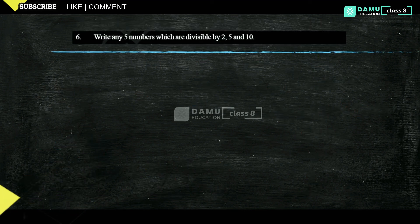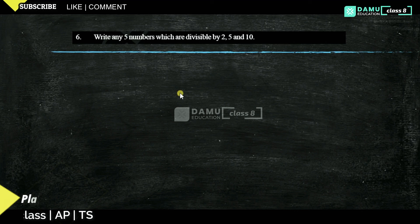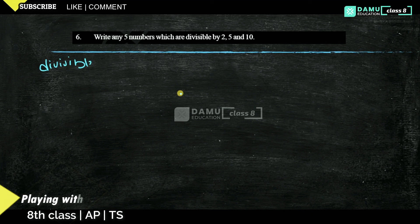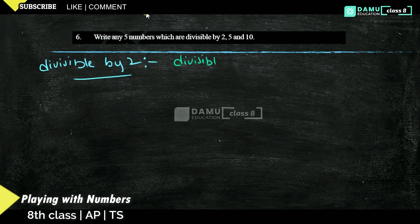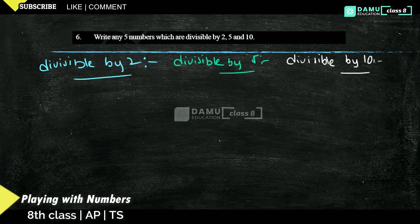In the sixth question, we write any 5 numbers which are divisible by 2, 5, and 10. We need to know the divisibility rules: for 2, the unit digit should be 0, 2, 4, 6, or 8; for 5, it should be 0 or 5; for 10, it must be 0. The key is to check unit digits.